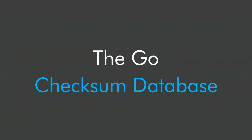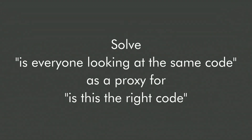Our solution is the Go checksum database, designed by Russ Cox and me. The core idea is to solve 'is everyone looking at the same code?' instead of 'is this the right code?' Solving whether this is the original code requires a relationship with the author. But if instead we solve whether everyone in the world is looking at the same code when they want version 1.2.3 of module foo — as long as everybody is looking at the same code, the problem is solved. If that 'everybody' includes the author, we solved the problem. And there's no way to make targeted attacks on your organization, because everybody is looking at the same code.